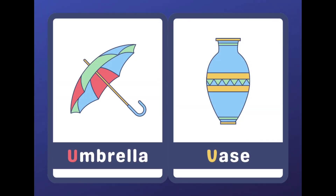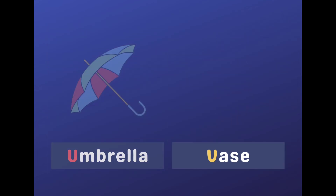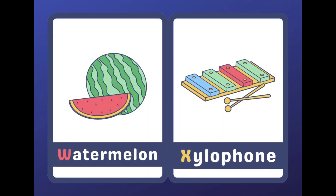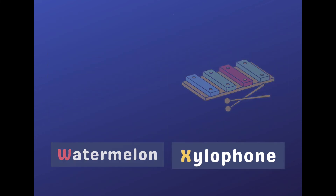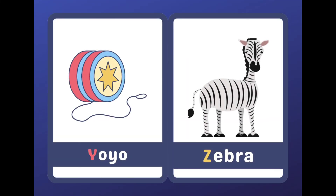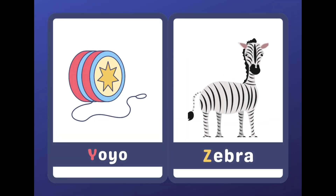U for an umbrella, V for vase, W for watermelon, X for xylophone, Y for yo-yo, and Z for zebra.